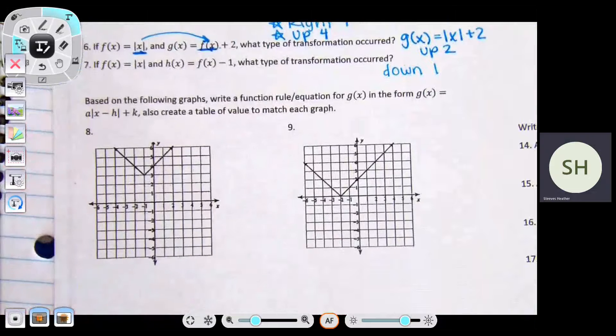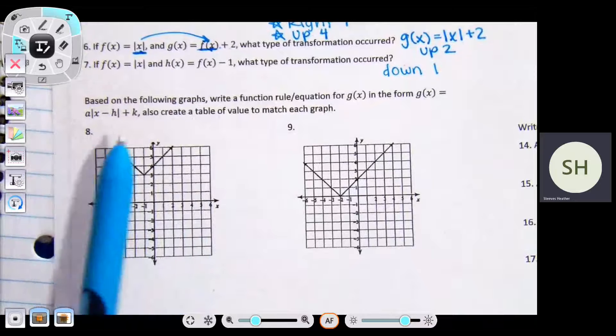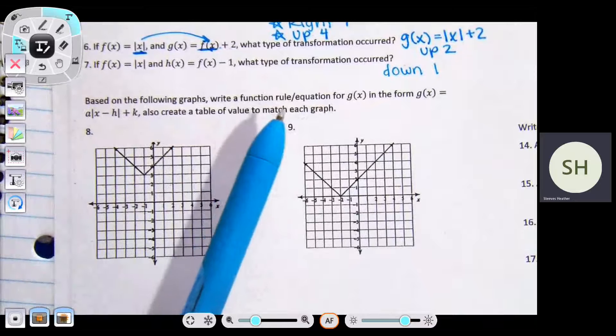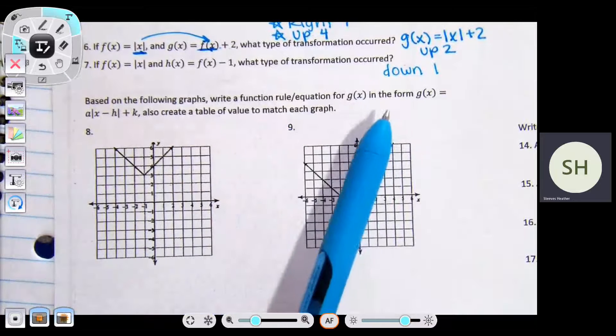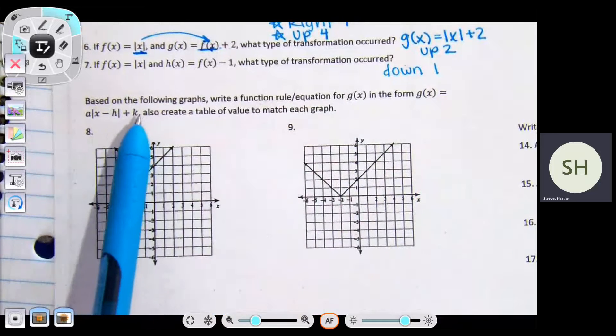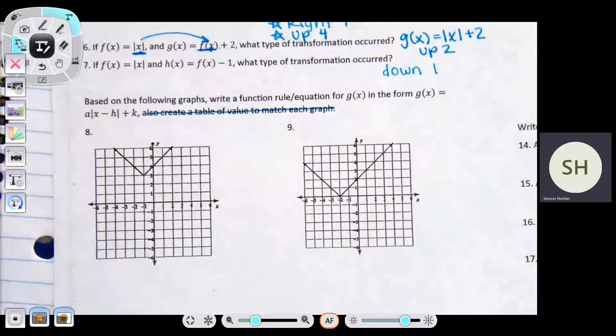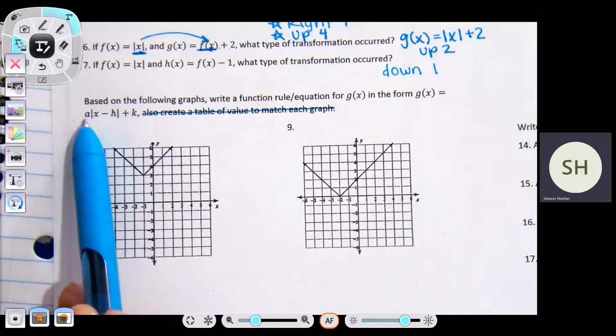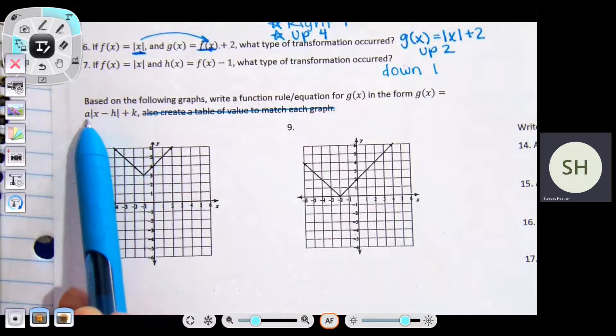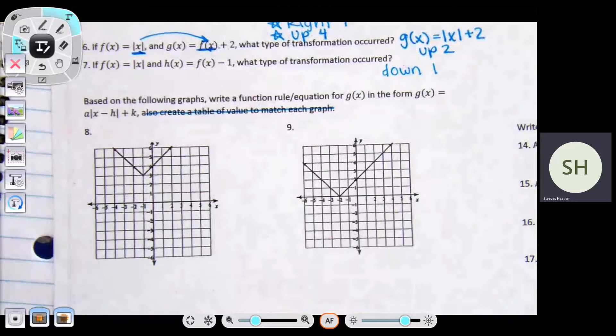Let's talk about these ones. We're going to do like number eight and probably like number twelve. Eight says based on the following graphs, write a function rule or equation for G of x in the form G of x equals a absolute value of x minus h plus k. We're not going to do this part creating a table of values. So basically, based on the graph, I'm going to build an equation in vertex form.